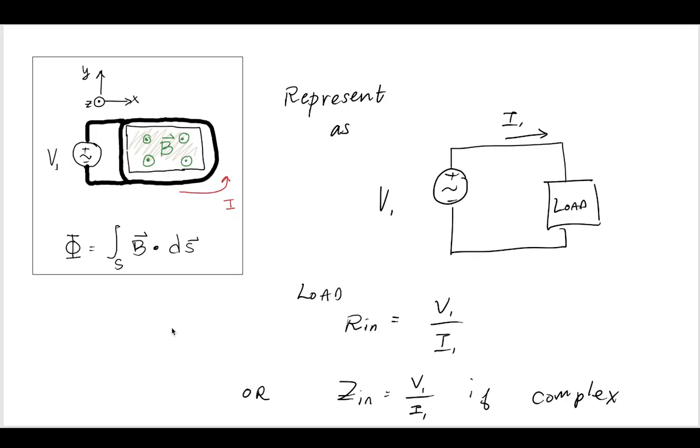Now we can represent this left-hand side, the primary side, as a voltage that creates a current through those coils into a load. If we call that load Rn we have this relationship from Ohm's law, or we can extend this to Zn if it was complex, relating V1 and I1.